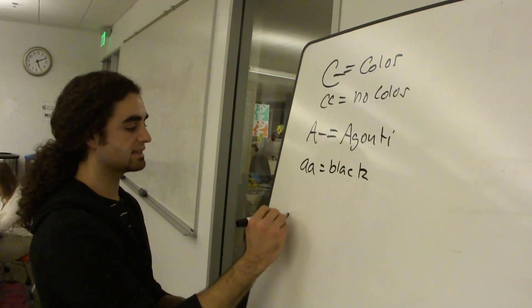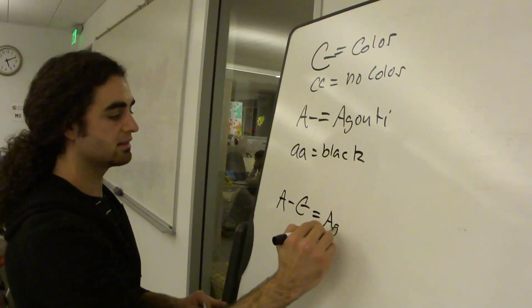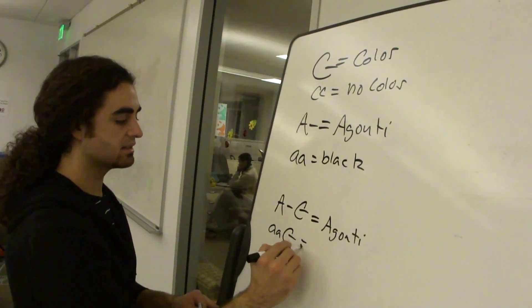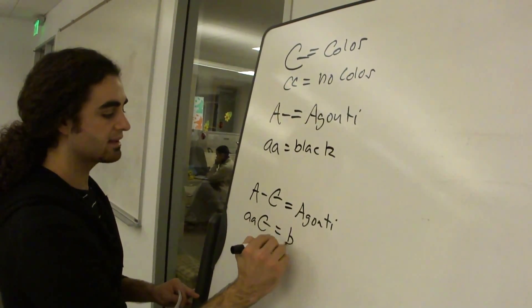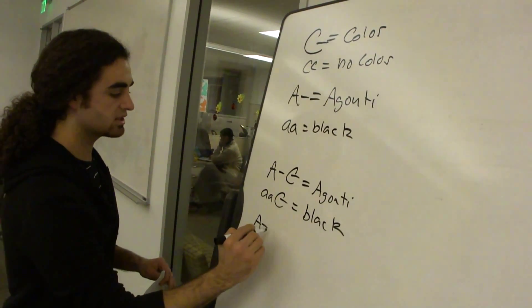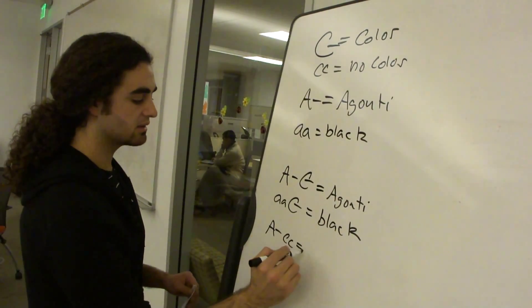So we can rewrite this as A dash, C dash is agouti. Little a, little a, C dash is black. And so we can go A dash, little c, little c. No matter any combination of A, if we have little c, little c, that's no color.